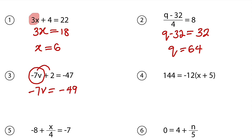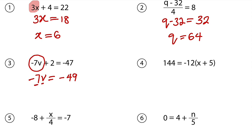Because negative 49 plus 2 will give us negative 47. Then you need to ask yourself, what number can you multiply by negative 7 to get negative 49? You should know that you can only multiply a positive number by a negative number to obtain a negative number. Therefore, this v must be a positive number. And I know that 7 times 7 will give us 49. So negative 7 times positive 7 will give us negative 49. So v will be equal to 7.